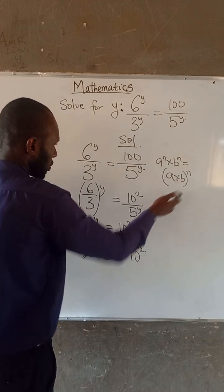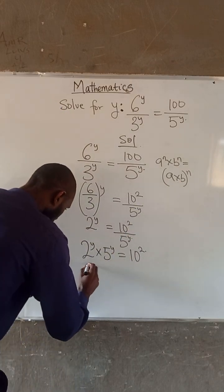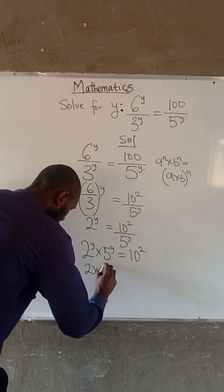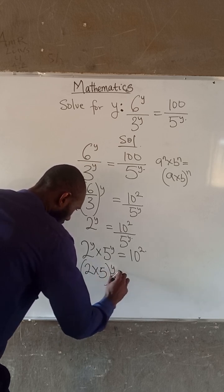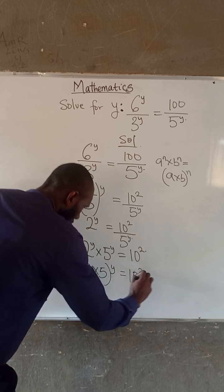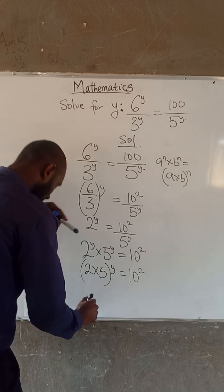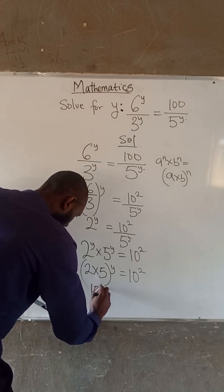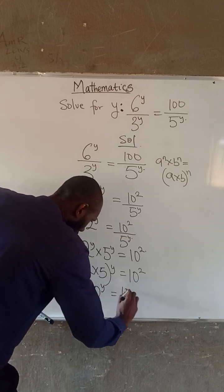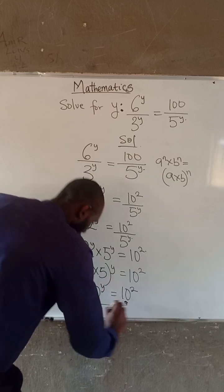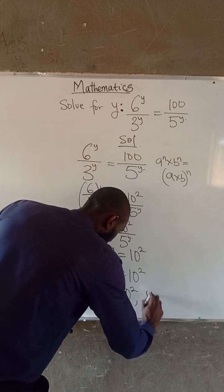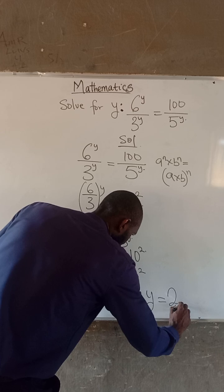At this point we have 2 to the power of Y times 5 to the power of Y. 2 times 5 is 10, so we have 10 to the power of Y equal to 10 to the power of 2. Now, since their bases are the same, we have that Y is equal to 2.